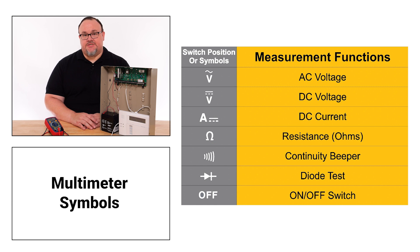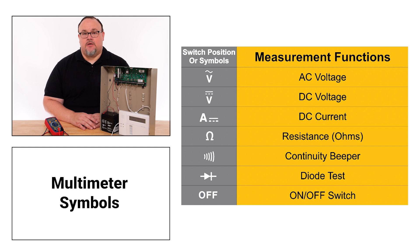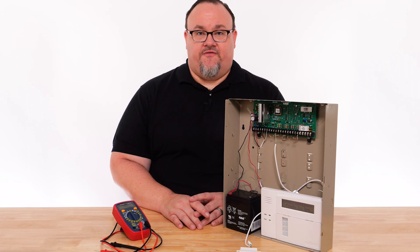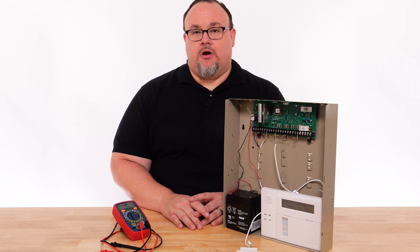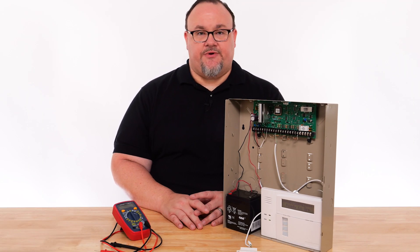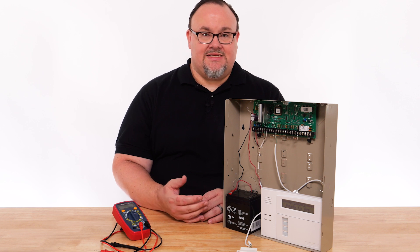Multimeters have various options and settings to help you read the correct voltages, continuity, and resistance of wired circuits. Choosing the correct symbol helps display the correct information on the multimeter screen. First, let's look at a power loss trouble condition on the security system in front of me — AC loss.